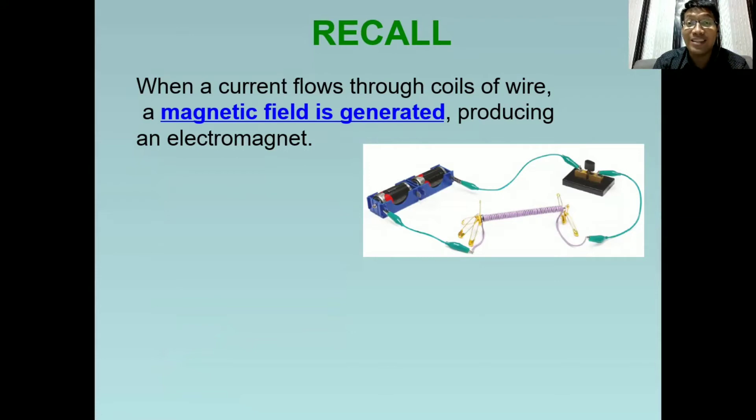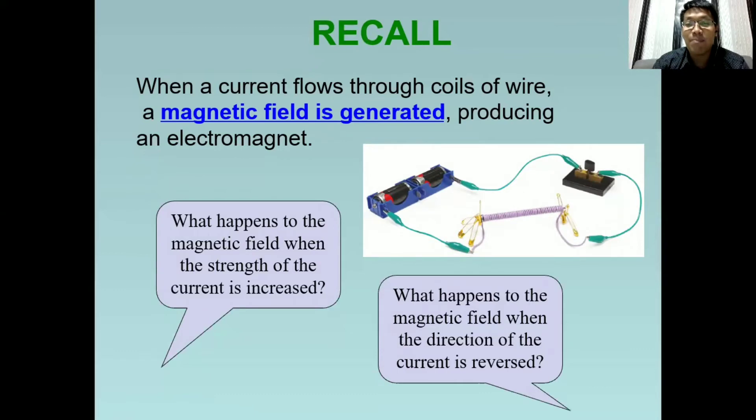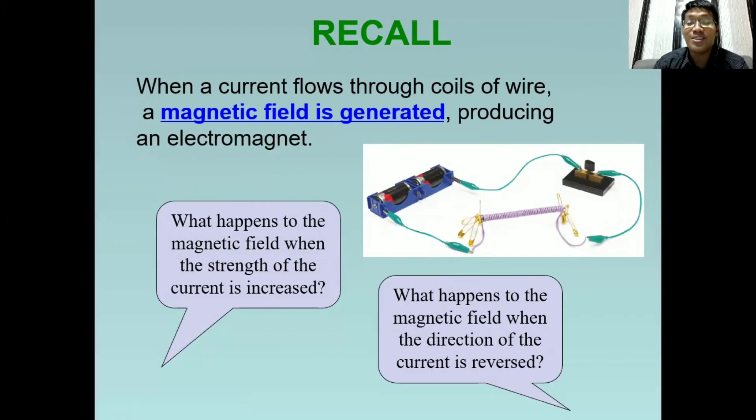For this lesson, we will answer these questions. What happens to the magnetic field when the strength of the current is increased? And what happens to the magnetic field when the direction of the current is reversed? Let us discover the answers as we go through with this lesson.